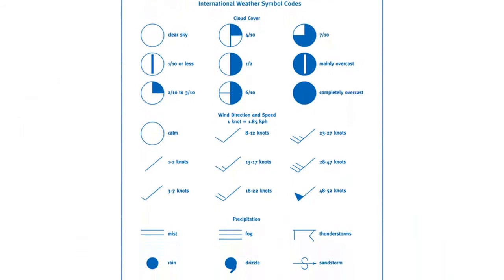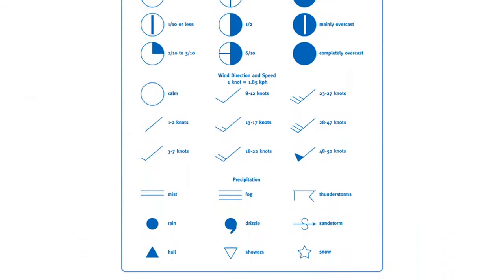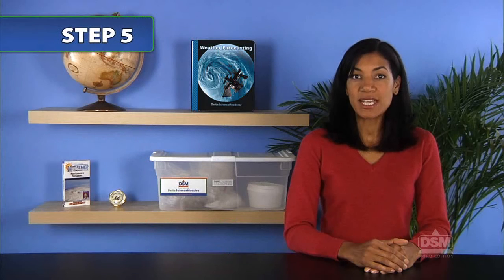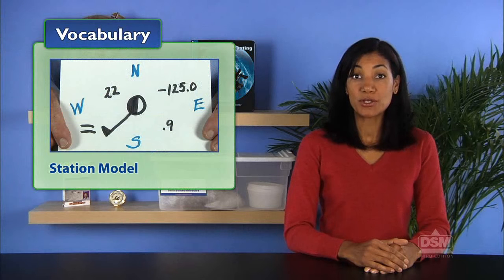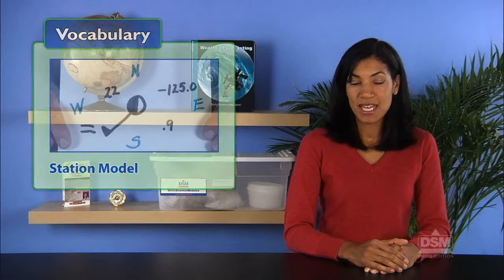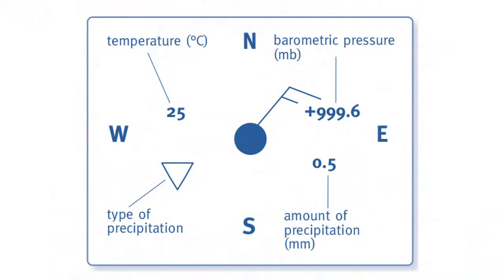Distribute Activity Sheet 6 and the materials. Have students familiarize themselves with the weather map symbols on the activity sheet. Next, explain to students that a station model uses codes and symbols to show what the weather is like in a certain place. Show a sample station model and tell students that this is a simplified version of an actual station model.